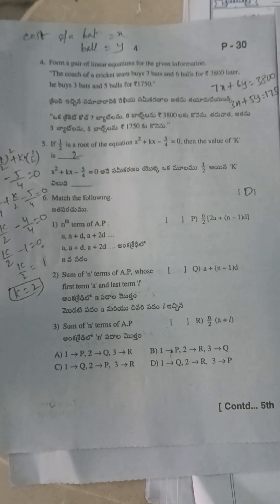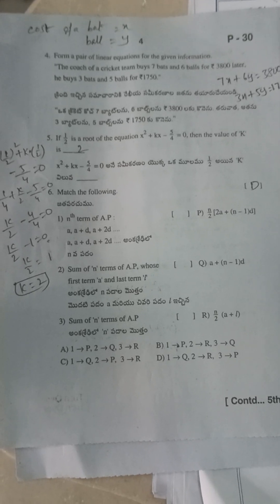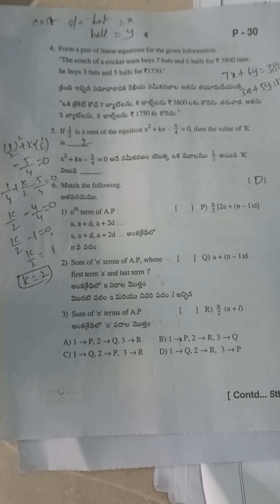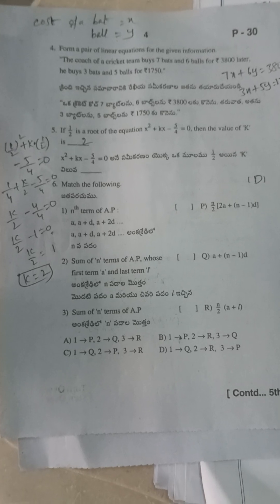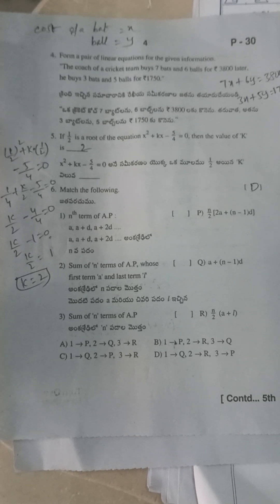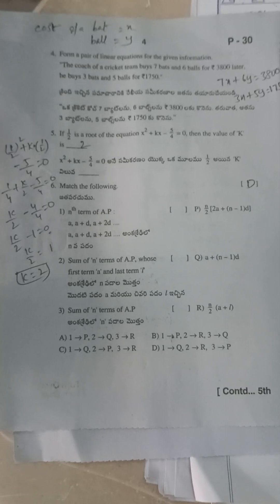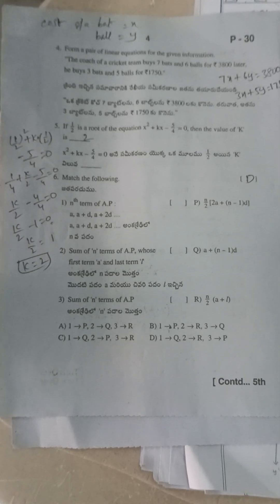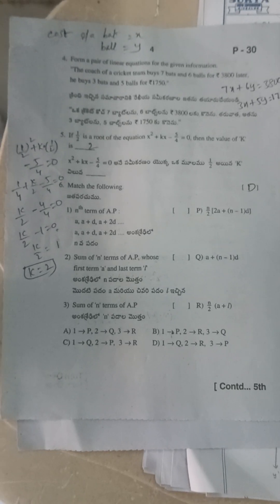Fourth question: form a pair of linear equations from the given information. The coach of a cricket team buys 7 bats and 6 balls for ₹3800. Later, he buys 3 bats and 5 balls for ₹1750. That gives: 7x + 6y = 3800 and 3x + 5y = 1750.